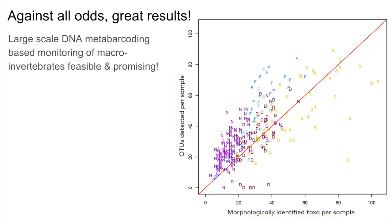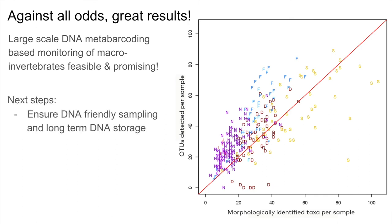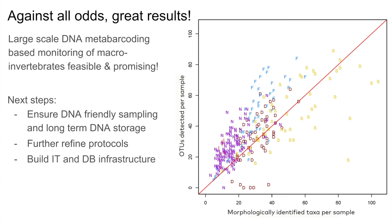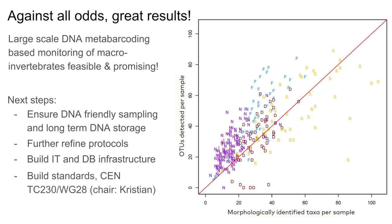What are the next steps? It's really important to make sure the sampling is done in a DNA-friendly way. The protocols certainly have to be further refined and improved, and the IT infrastructure should be built out as well as the reference databases. There also need to be some standards to facilitate the uptake of these methods — Christian Meissner is actually chairing a commission working on exactly that with the DNA Aquanet community. And of course there should be constant communication with stakeholders to make sure whatever we are building is actually useful for them and meets the needs for macroinvertebrate monitoring.